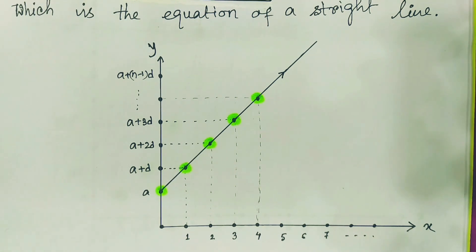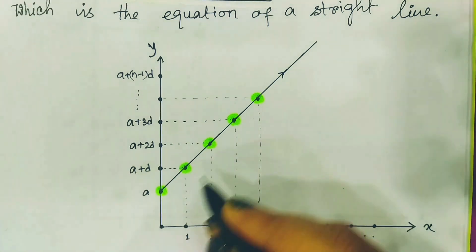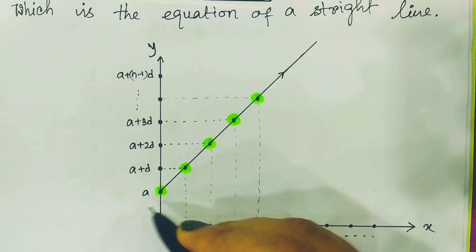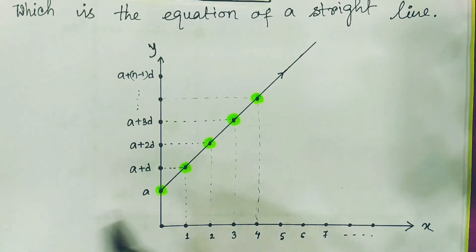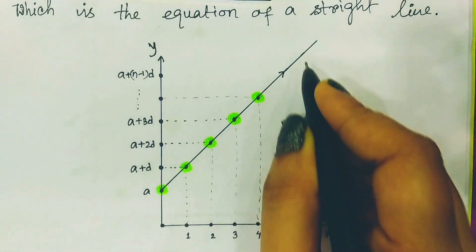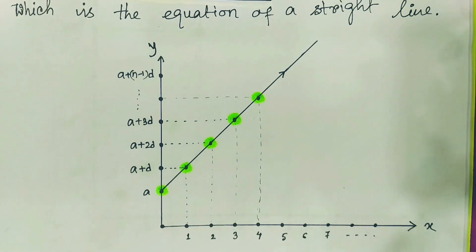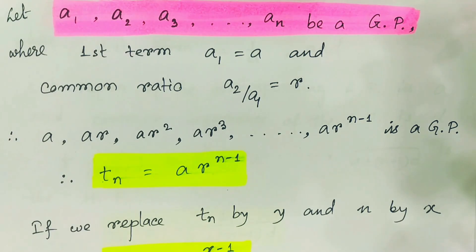Any straight line or curved line is a continuous form, but in the AP series we find only discrete points. Its geometric representation lies on a straight line. Conversely, if we consider equispaced points on a straight line, those points form an arithmetic progression. Similarly, we can find a geometric visualization for the GP as well.